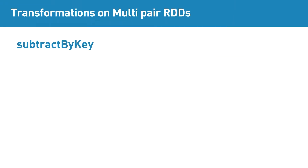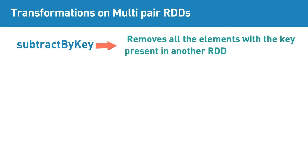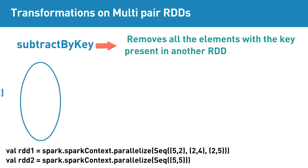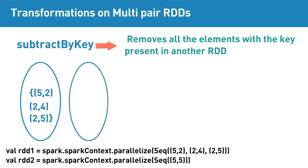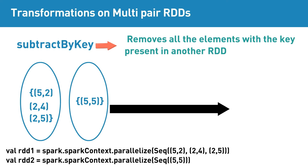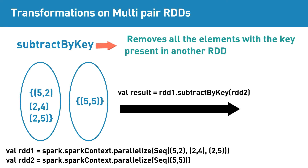Subtract by key is a multi-pair RDD transformation that removes all of the elements with the key present in another RDD. For instance, if input RDD1 contains elements 5-2, 2-4, 2-5, and input RDD2 contains 5-5, then applying Subtract by key transformation will return 2-4, 2-5.